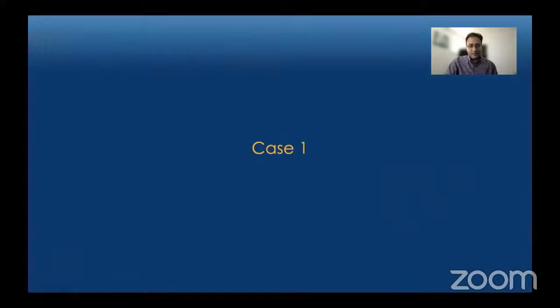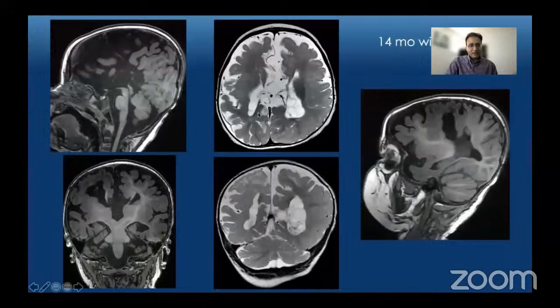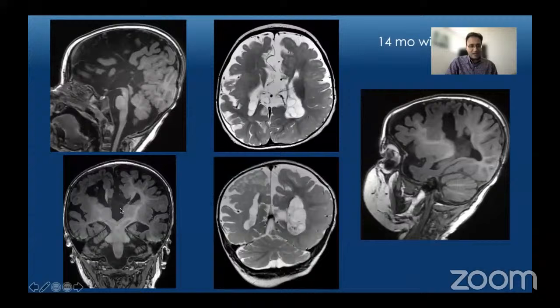The first case is a 15-month-old who presented with seizures. On the sagittal T1-weighted images we can see absence of the corpus callosum, and there are multiple sulci which radiate all the way up to the ventricular margins. On the coronal images there is absence of crossing fibers, abnormal orientation of the frontal horns, a high-riding and dilated third ventricle. Similarly on the axial T2-weighted images there is absence of crossing fibers in the midline with a prominent inter-hemispheric fissure.